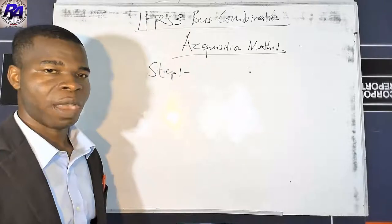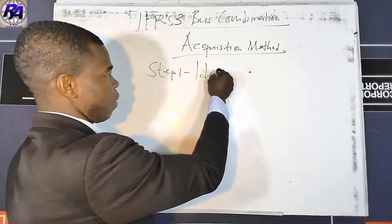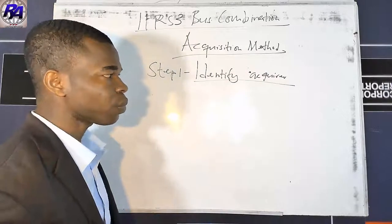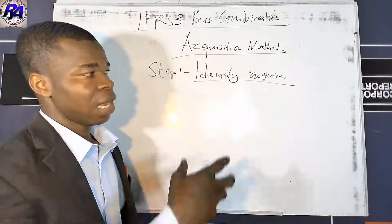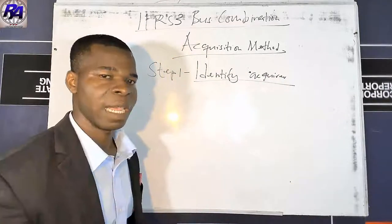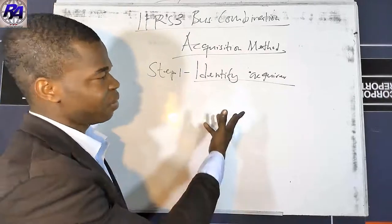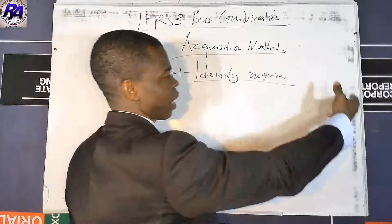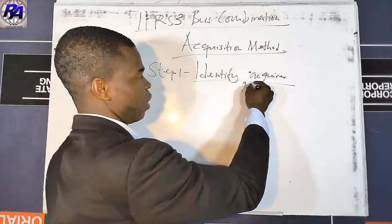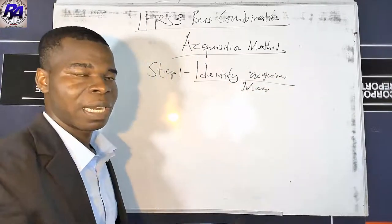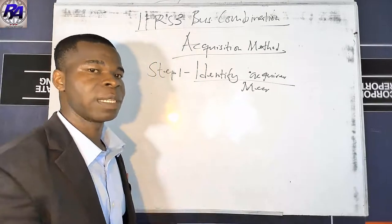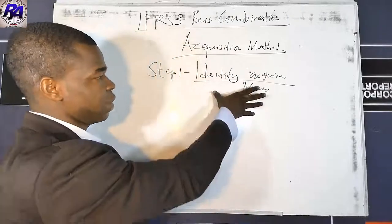Step one is to identify the acquirer. Here we want to look at the date the transaction is taking place and identify who is the parent — the entity obtaining control over another entity. In a merger, the larger entity is generally the one obtaining control over the smaller entity, but note that a reverse merger is also possible, where the smaller entity takes over the larger entity.